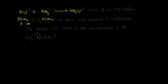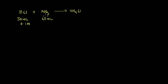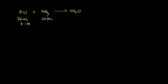Let's start by writing down the information given in the problem and try to understand what it is asking us to calculate. We are given that the reaction is between 50 ml of 0.1 molar HCl, and we don't know the concentration of ammonia, but we are told that the volume of the ammonia is 25 ml.